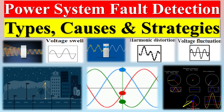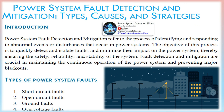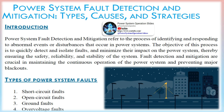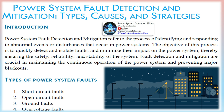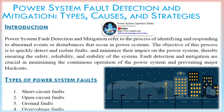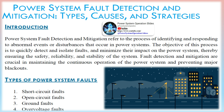Power system fault detection and mitigation refer to the process of identifying and responding to abnormal events or disturbances that occur in power systems. The objective of this process is to quickly detect and isolate faults and minimize their impact on the power system, thereby ensuring the safety, reliability, and stability of the system. Fault detection and mitigation are crucial in maintaining the continuous operation of the power system and preventing major blackouts.